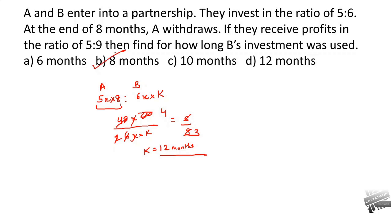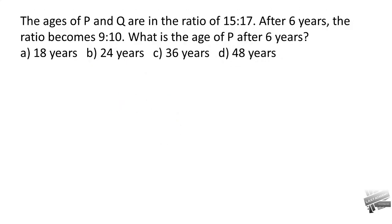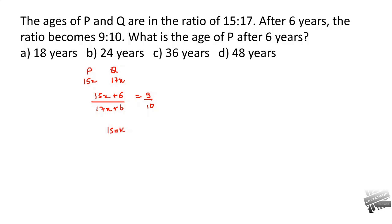Next question: the ages of P and Q are in the ratio of 15 to 17. After six years, their ratio becomes 9 to 10. So P's age is 15x and Q's age is 17x. After six years: (15x plus 6) to (17x plus 6) equals 9 to 10.